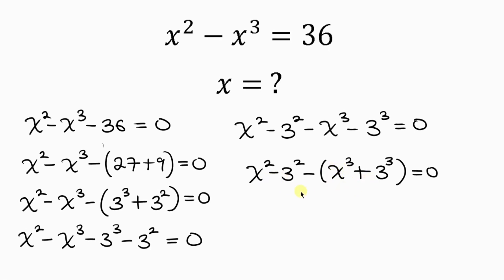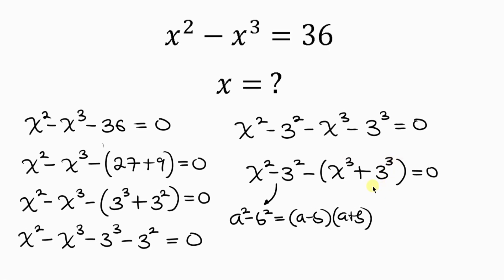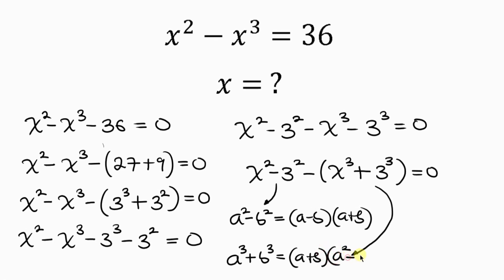We have two properties to work on here. The first is difference of two squares: a squared minus b squared can be written as a minus b times a plus b. We also have the sum of two cubes: a cubed plus b cubed can be written as a plus b times a squared minus ab plus b squared.